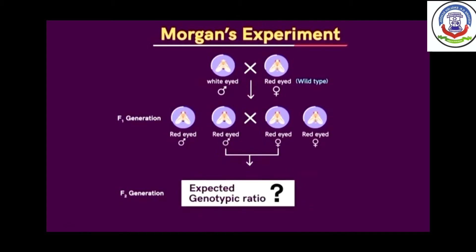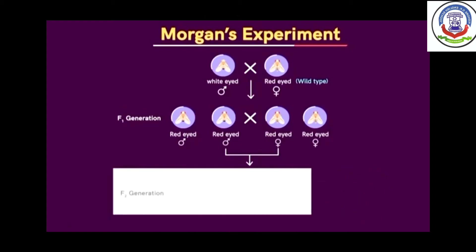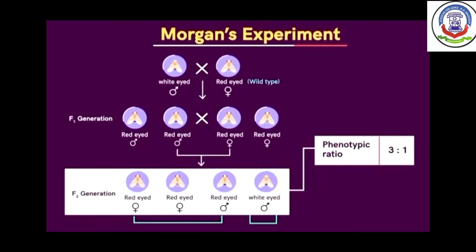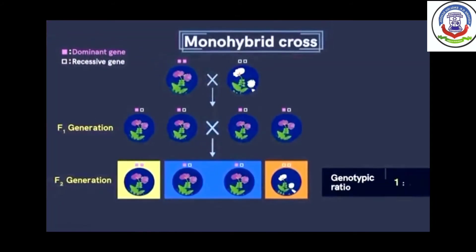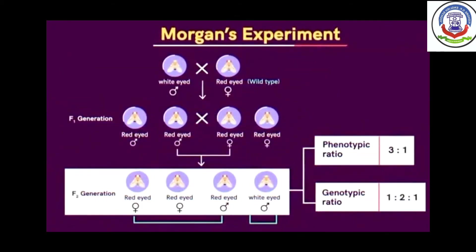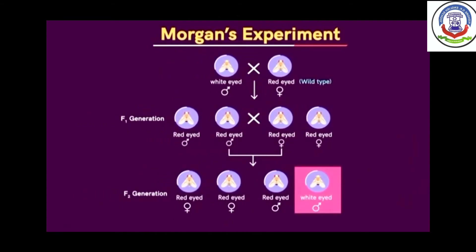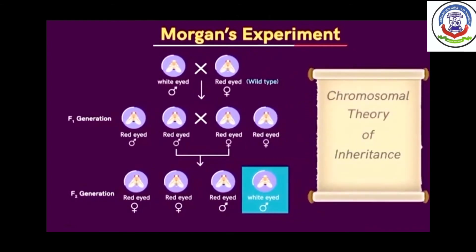Morgan obtained 3 red-eyed flies and 1 white-eyed fly in the F2 generation, with a genotypic ratio of 1:2:1. Although these results confirmed Mendel's ratios — this time for animals rather than plants — things didn't end there. Notably, the only white-eyed fly obtained was male. This raised the question: why was there no white-eyed female? This hinted at something deeper.